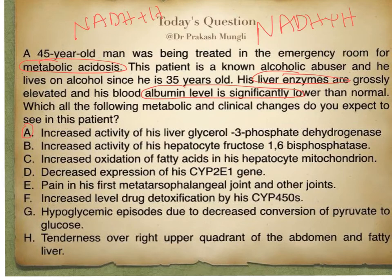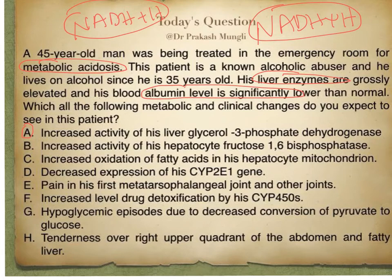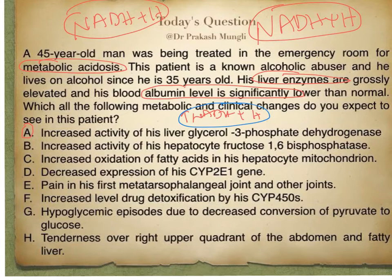So for every molecule of alcohol converted to acetate, you get two molecules of NADH + H⁺. This means when alcohol metabolism is ongoing in our cells, there will be plenty of NADH + H⁺. The most important thing to remember is that the ratio of NADH to NAD⁺ will be increased — there will be far more NADH compared to NAD⁺.